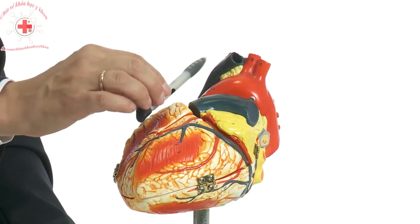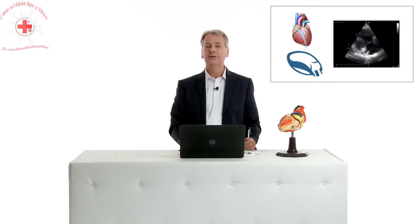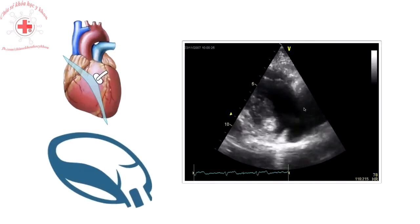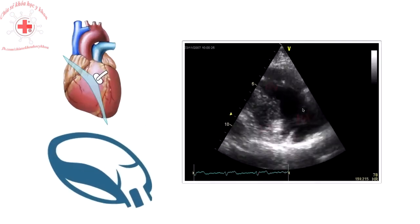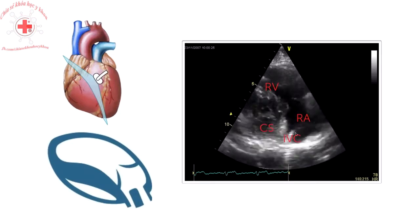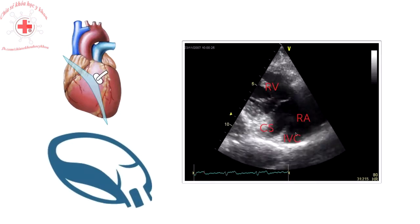In the classic parasternal long axis view you're going to cut through the left heart part. If you do this you'll get a view which looks something like this. You have the right ventricle, the right atrium, the coronary sinus, and the IVC. Let's take a look in the following demonstration of how you can get such a view and more details of what you can do with it.